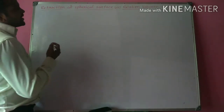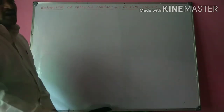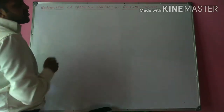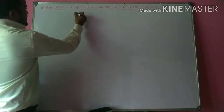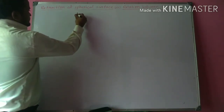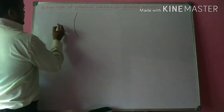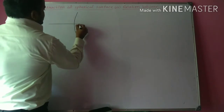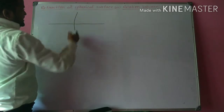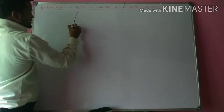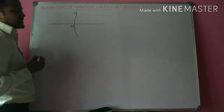Let us consider a spherical surface of radius of curvature R, where the refractive index of that medium is N. Let us consider and draw the spherical surface like this. This is the spherical surface. Let us draw the principal axis. This is the principal axis. Let us label the spherical surface as MN.